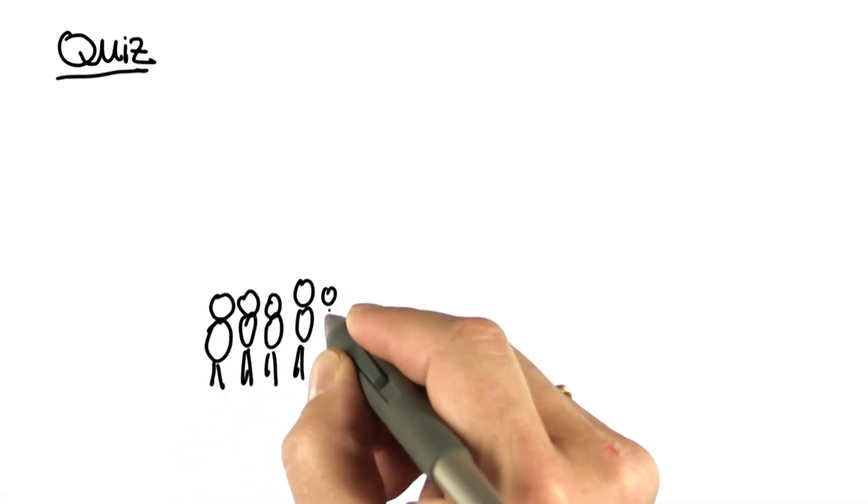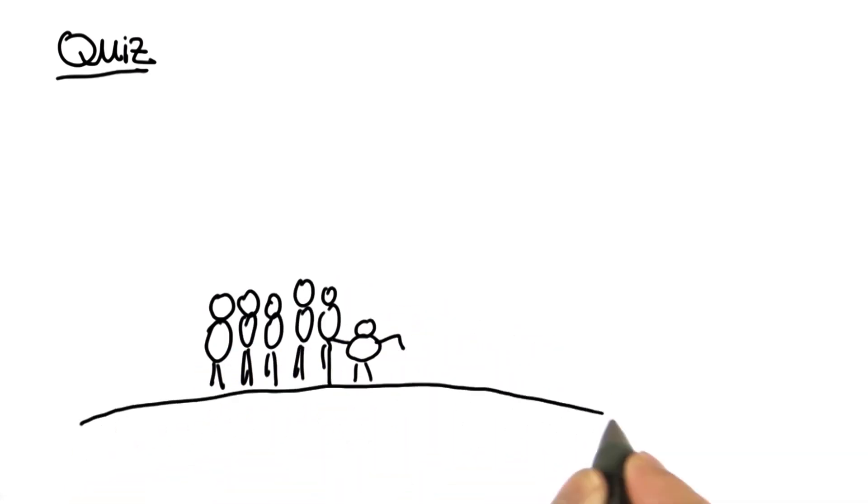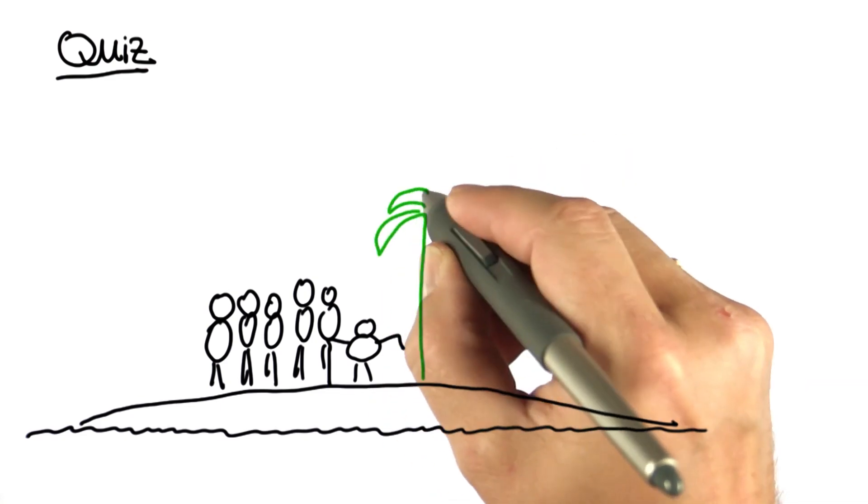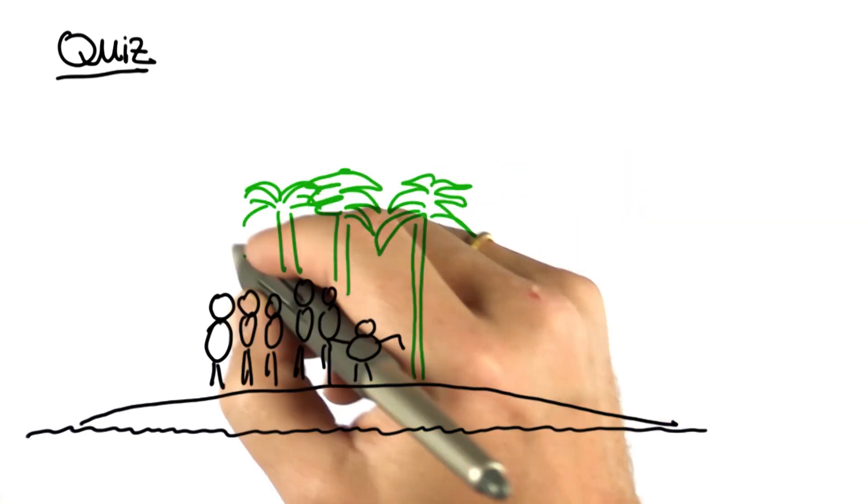So here's a quiz. Five guys and a monkey are stranded on an island. On the island are many coconut trees with many coconuts.